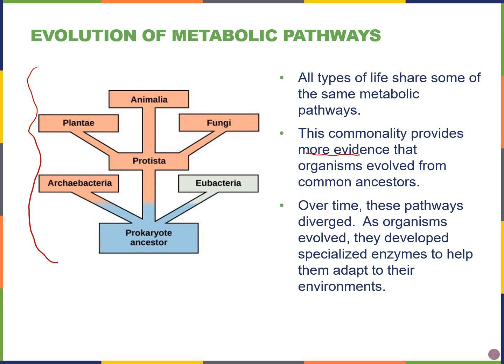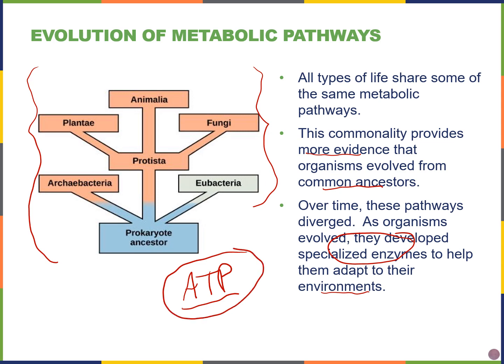Interestingly, all types of living organisms share some common metabolic pathways, which provides evidence that all of us originated from a common ancestor. Over time, differences in these metabolic pathways develop due to specialized enzymes that allow organisms to adapt to their specific environments. All organisms ultimately harvest energy from their environment — for example by consuming other organisms and breaking down chemical bonds — to make ATP, a form of energy used to carry out functions inside the cell.